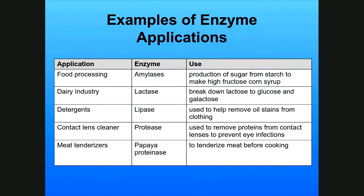We also use enzymes in different applications. In food processing, amylases are used in the production of sugar from starch to make high-fructose corn syrup. In the dairy industry, lactase is used to break down lactose into glucose and galactose for people who are lactose intolerant. Lipases are used in detergents to remove oil stains from clothing. Proteases are used in contact lens cleaner to remove proteins from lenses and prevent eye infections. And meat tenderizer is actually a proteinase enzyme used to tenderize meat before cooking.